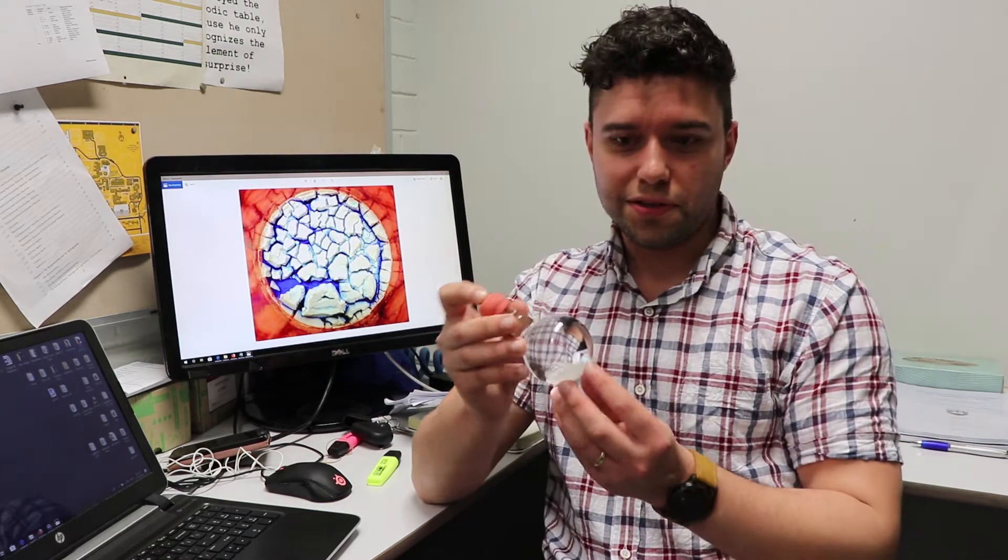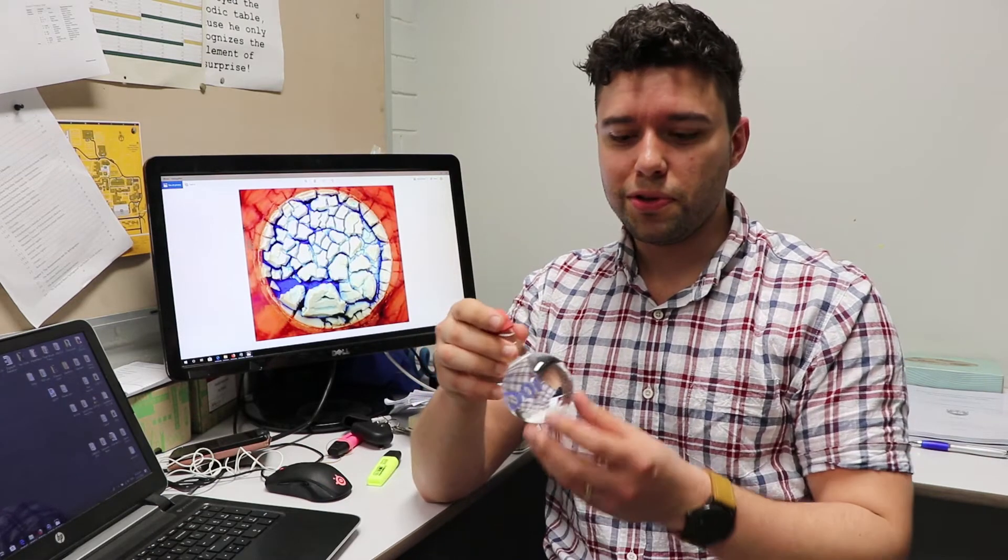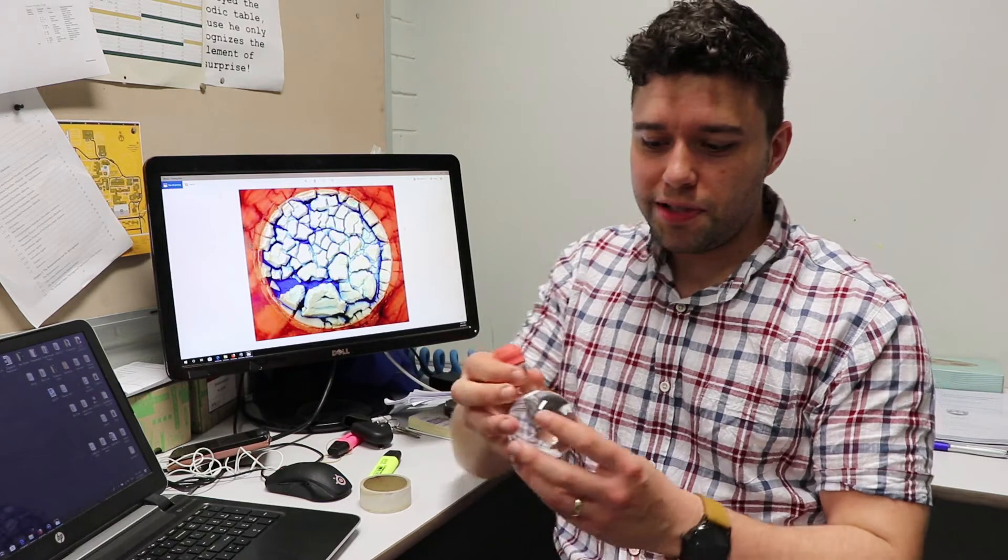In the flask we have a saturated solution of ammonium chloride. It's a salt. You may have heard of sodium chloride. This is ammonium. Ammonium chloride is a little bit different.